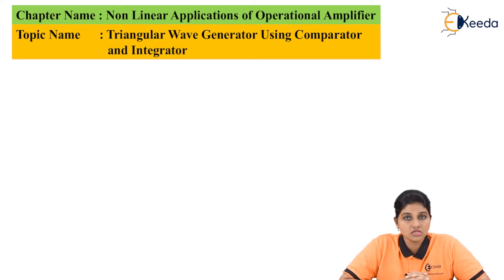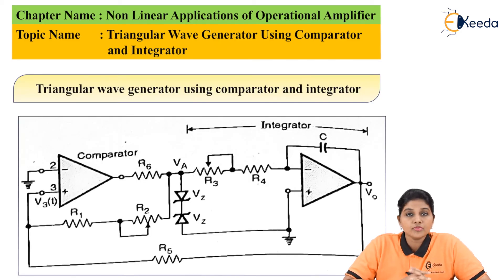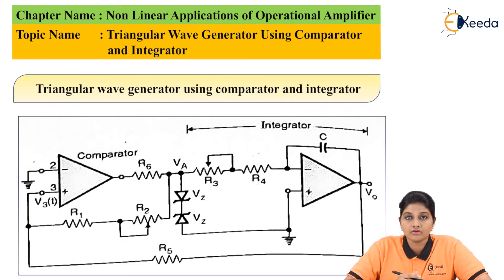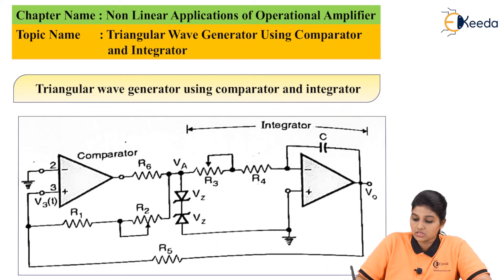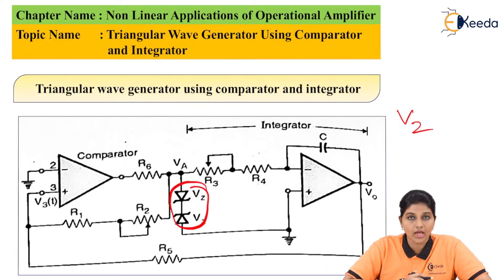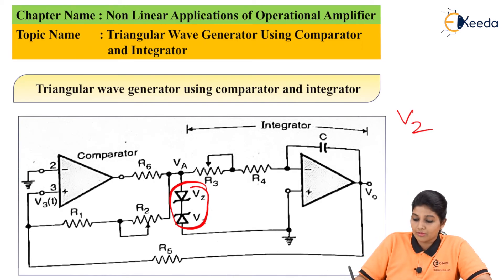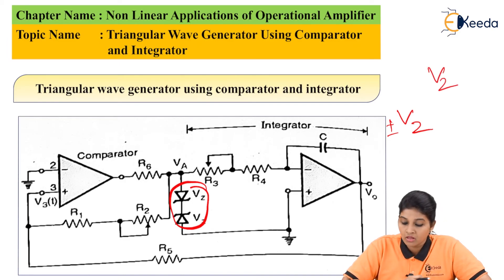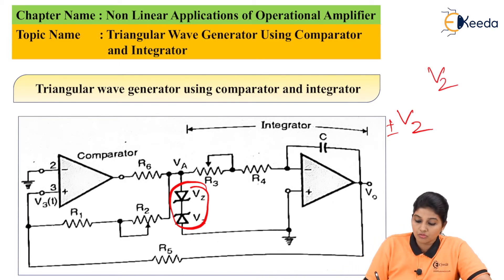For that, first consider the circuit diagram. From the circuit diagram we will come to know that the output of the comparator is clamped to the value Vz, and this is achieved by connecting two zener diodes back to back. The voltage is clamped to plus or minus Vz, with each zener diode having a voltage of Vz. So we can say that the voltage at terminal A, Va, is equal to Vz.